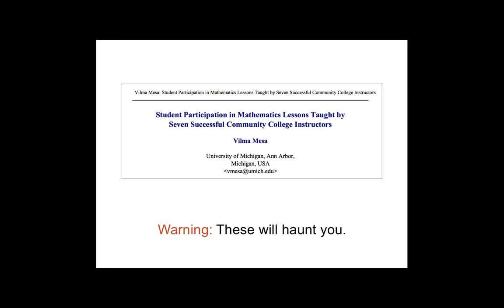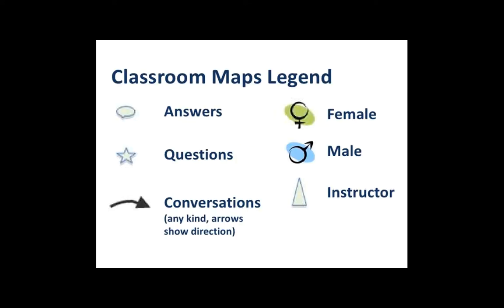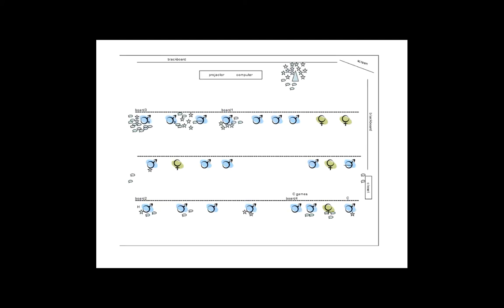So this was research done out of the University of Michigan. And it looked at mapping out all the interactions in math classrooms. So I'm going to show you three math classrooms. There's a legend on each of these. The important part is that the questions and answers are the stars and the bubbles. And the instructor is the triangle on each of these pages. So here's the first classroom. We're getting kind of a bird's eye view. The top here is the front of the room. Here's the professor, the triangle. And here are all the students in the room. This is recorded over an hour. This is an hour of interactions in this math classroom.